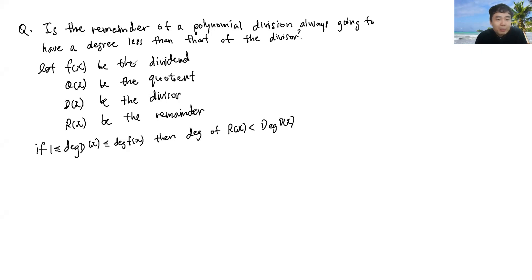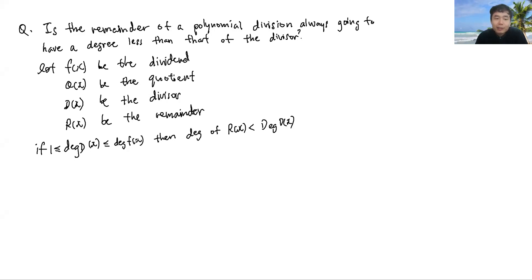So let f(x) be the dividend, q(x) be the quotient, d(x) be the divisor, and r(x) be the remainder. More specifically, we're saying that if the degree of the divisor is less than or equal to the degree of f(x), which is the dividend, but more than or equal to 1, then is the degree of the remainder going to be less than the degree of the divisor? So let's investigate.